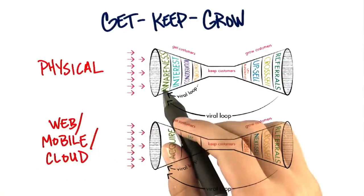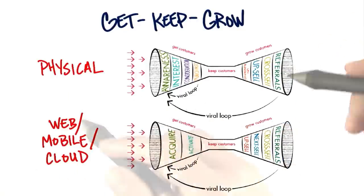In a physical channel, they were getting you into the funnel on the top. And for web, mobile, or cloud, they were getting you into the funnel on the bottom. Remember, these are just visual representations of a process. The world doesn't actually look like this,